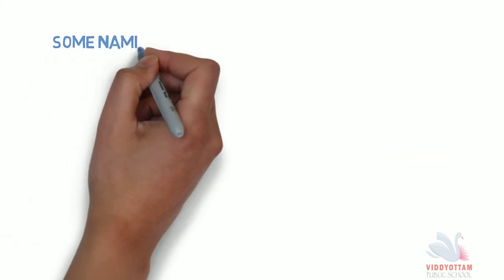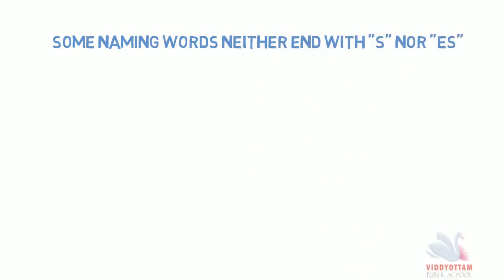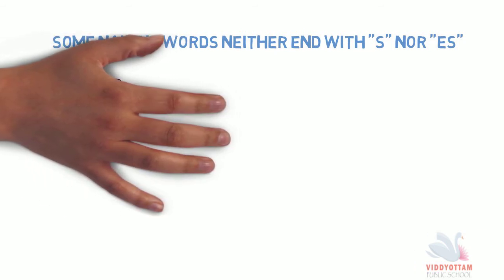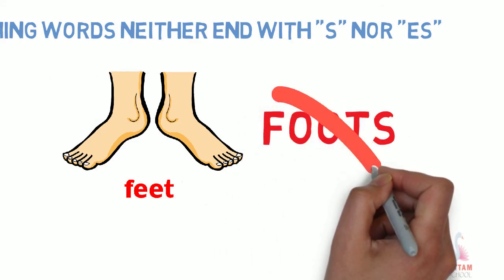Again, there are some naming words that end neither in S nor in ES when they mean more than one. There are some other changes. Many times we don't add S or ES to denote their plural form. When there is double O, we usually change this double O to double E. Like one foot, many feet. We don't say foots, we say feet.